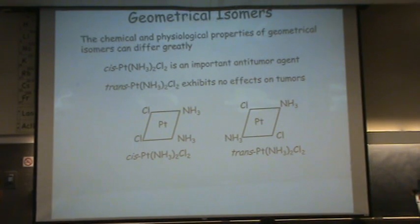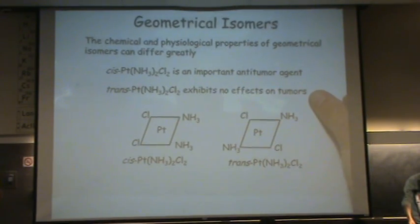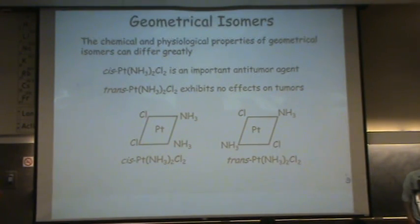Geometric isomers, stereoisomers in general, can have different properties. And you can see here, this one is the anti-tumor agent, where the trans one, whatever. Or you might have heard of like trans fats versus the cis bonds. You can have cis and trans type of bonds. Trans going across it, you're going to have totally different properties.